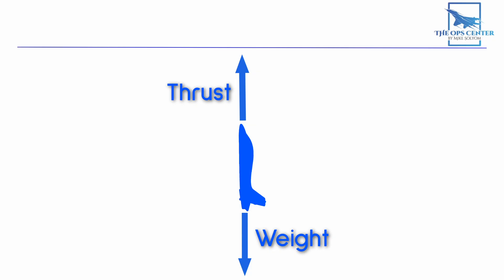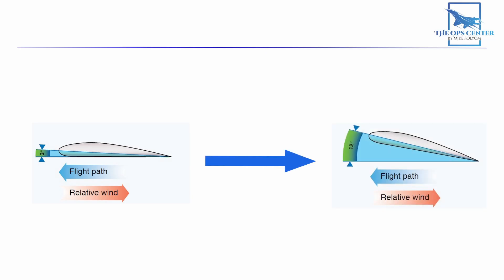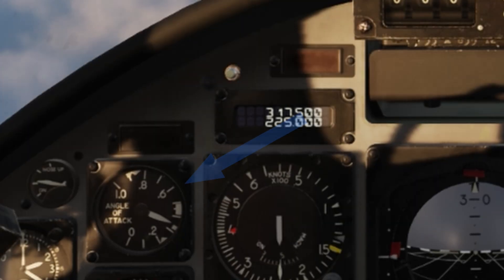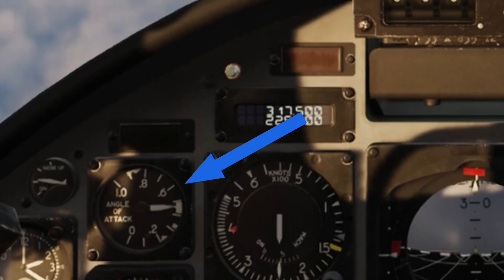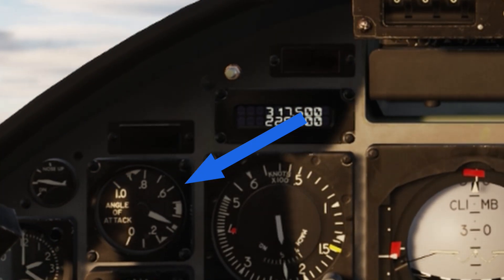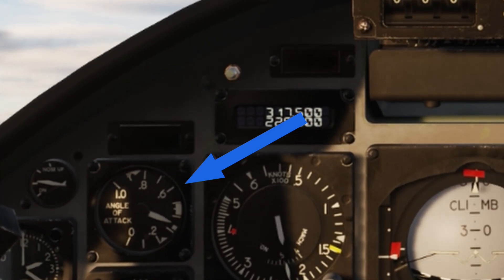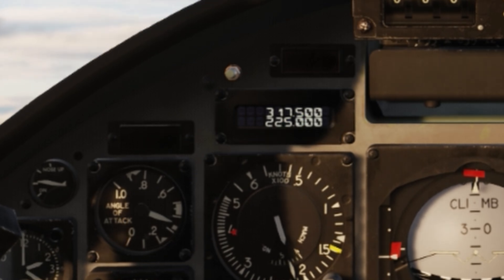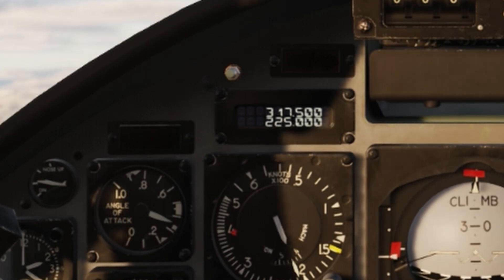One other thing that happens in a climb is a temporary increase in lift. Right after pulling back on the controls, the angle of attack will be higher, generating more lift. But as soon as the airflow stabilizes in the new direction of travel, that angle of attack will return to a lower level. We can see this with the SIM's built-in AOA indicator on screen — it gets a temporary bump right after we pull back on the stick, then falls back as the airflow stabilizes.